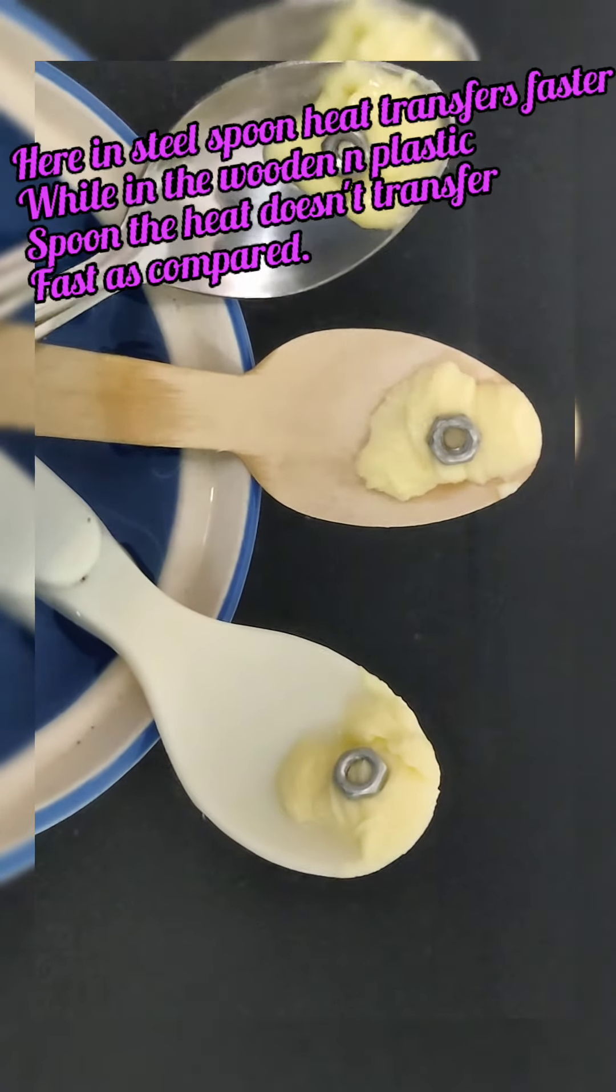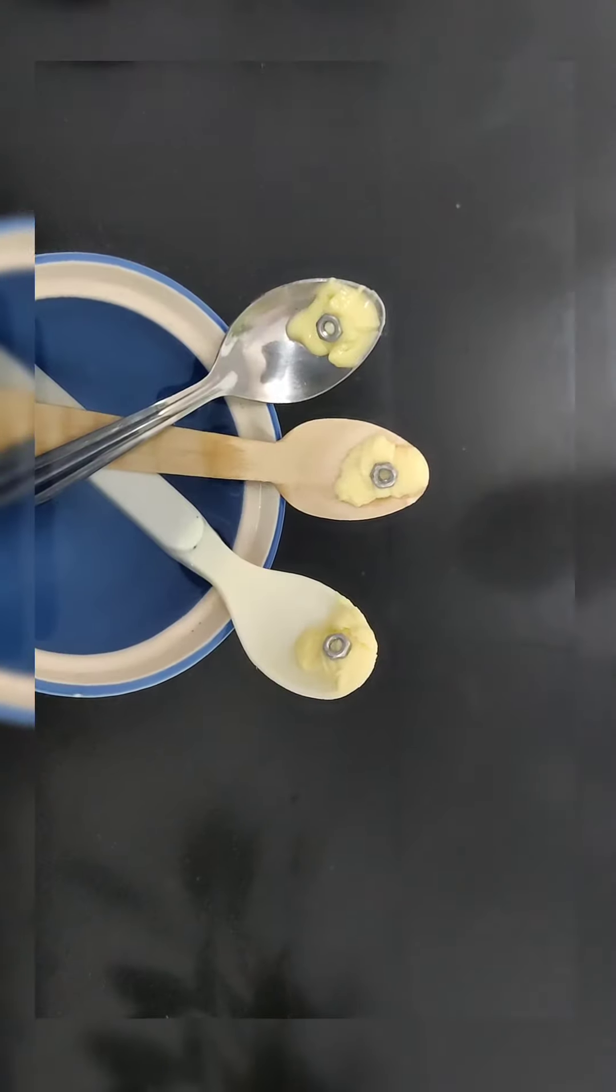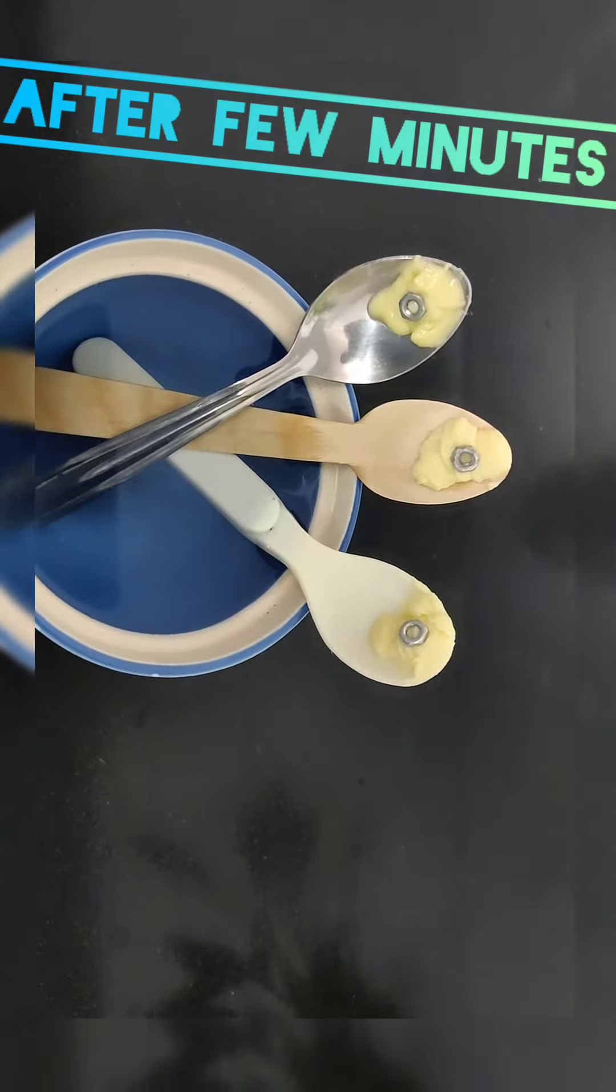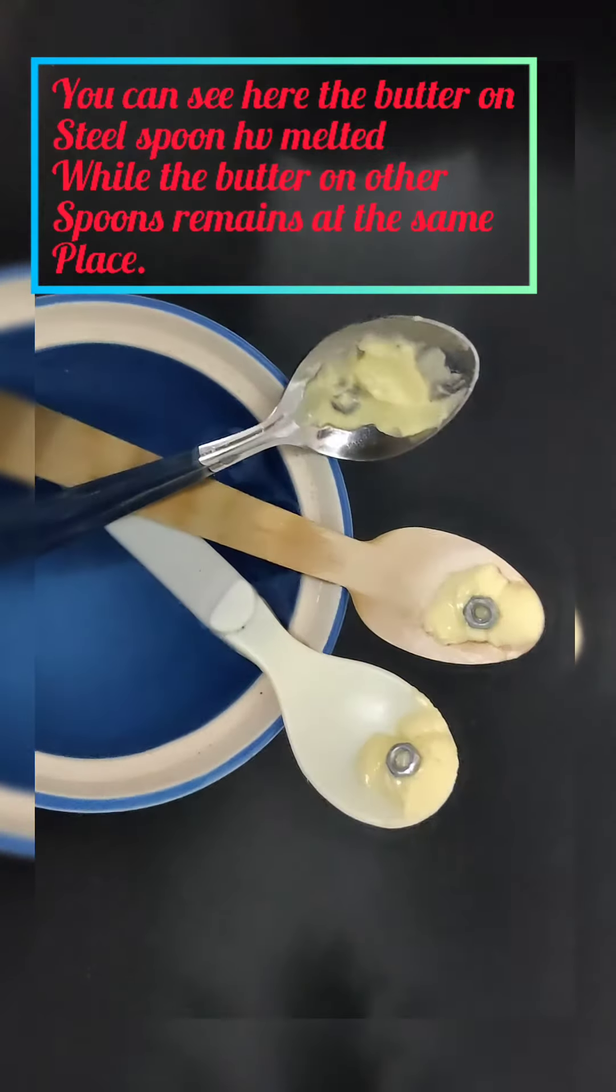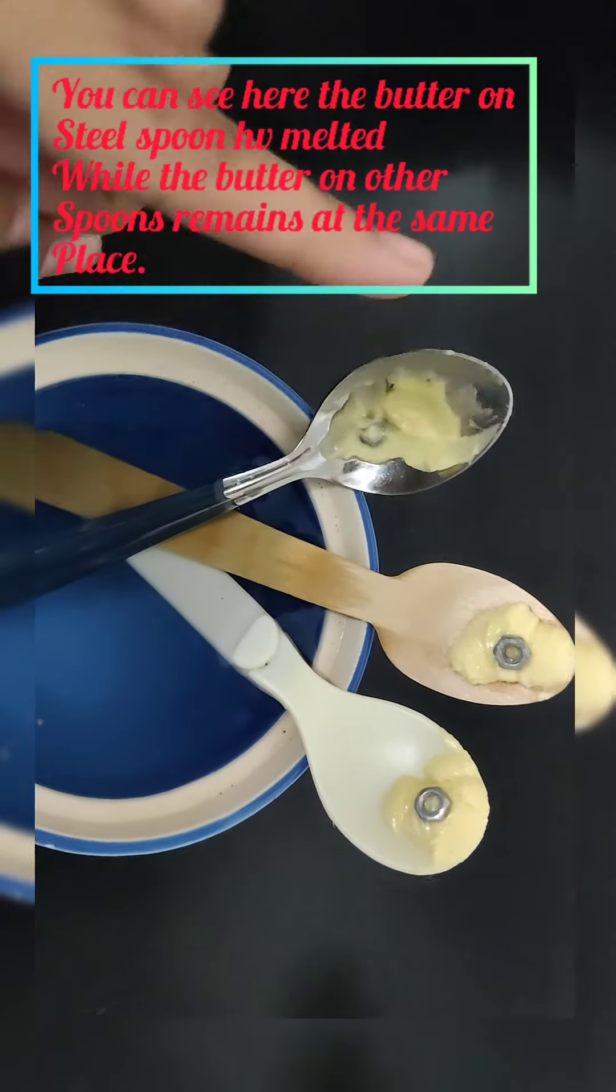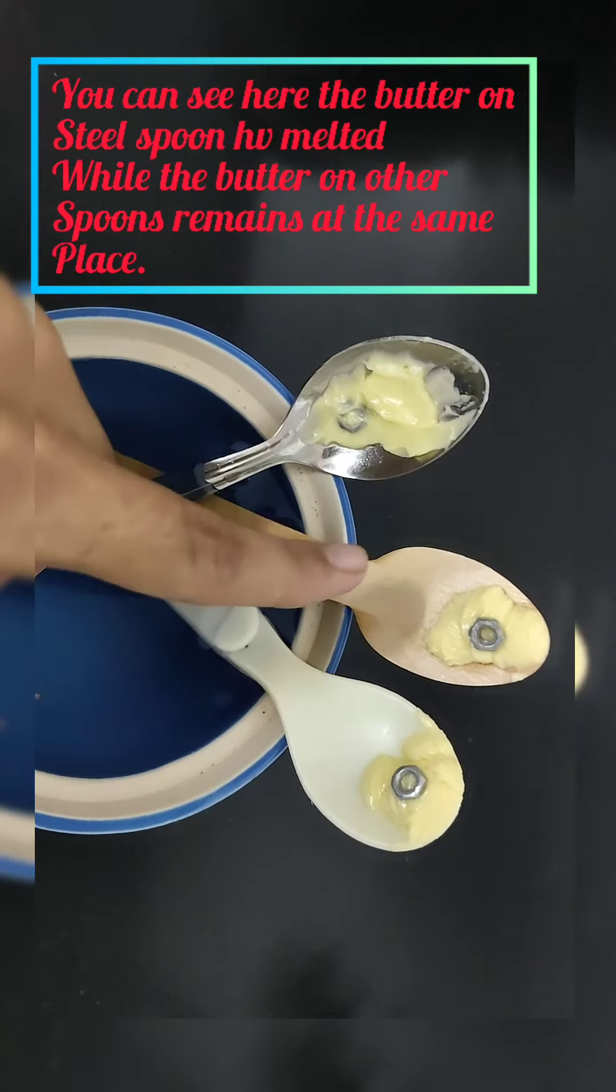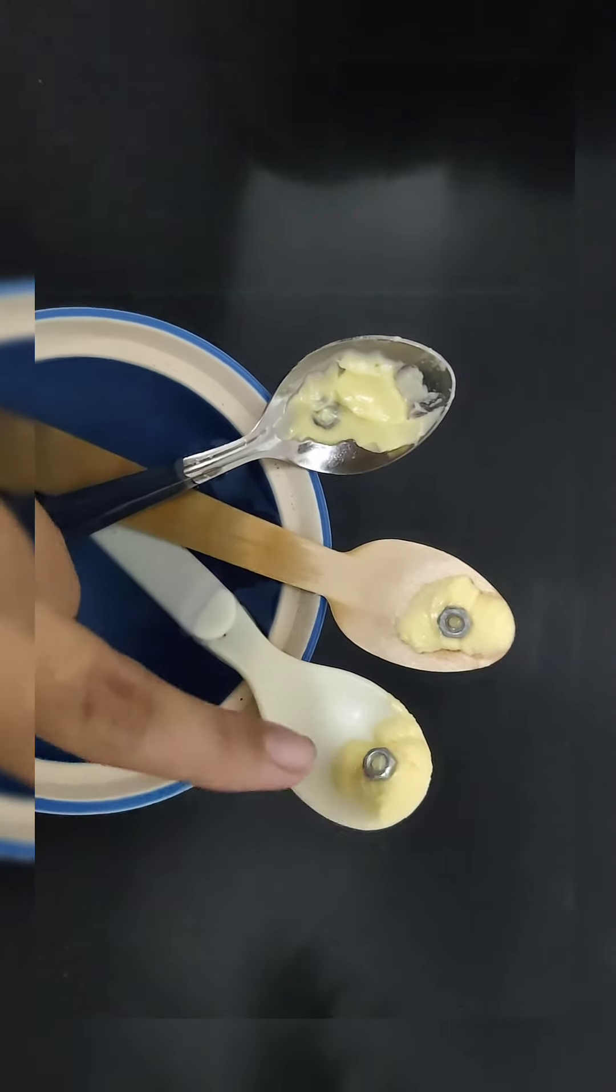Here the steel spoon heats faster while the wooden and plastic spoons remain the same. Now we will wait for a few minutes. You can see here the butter on the steel spoon has melted while the butter on other spoons remains the same.